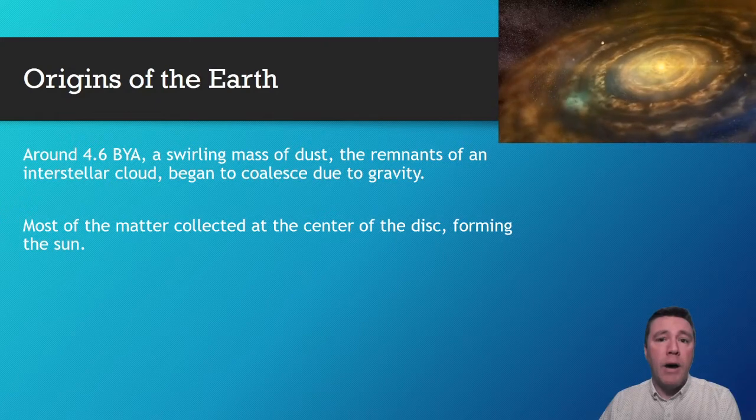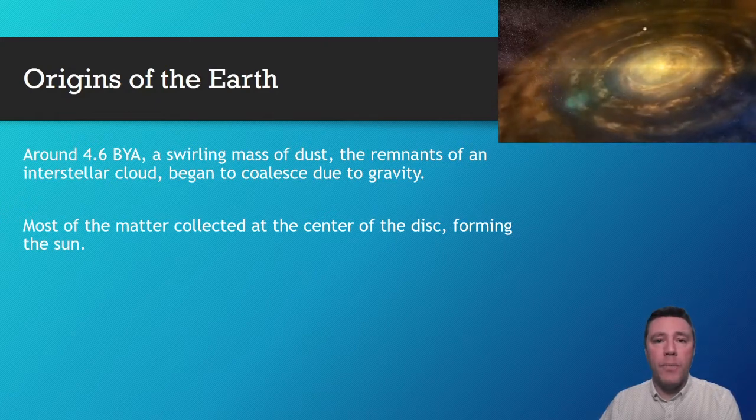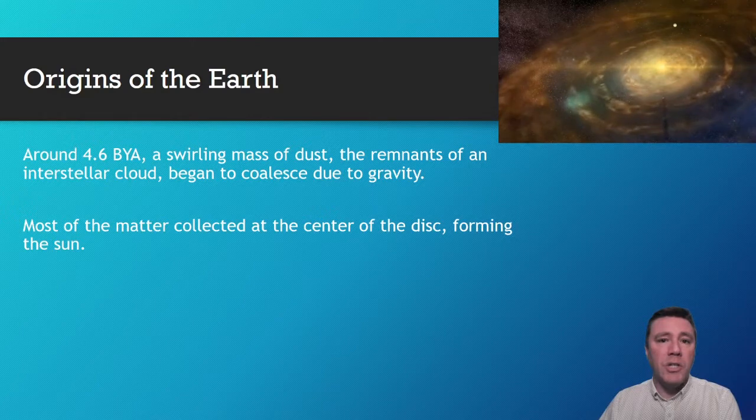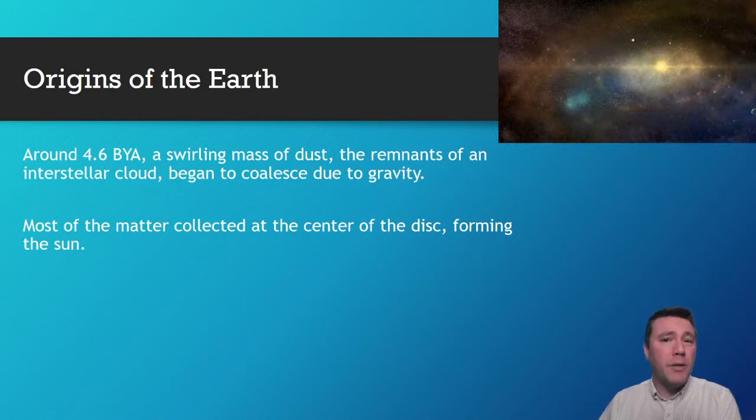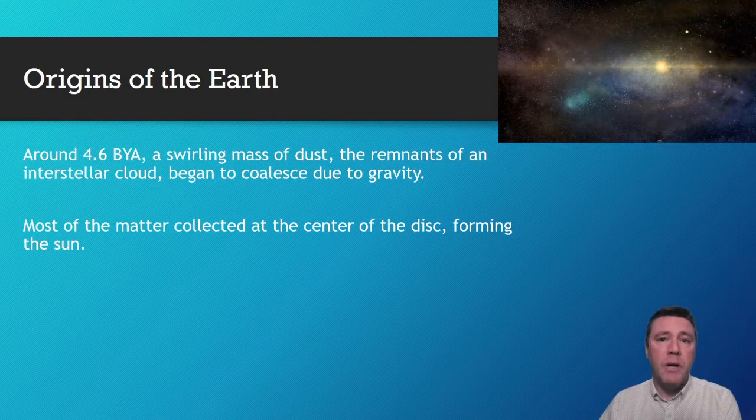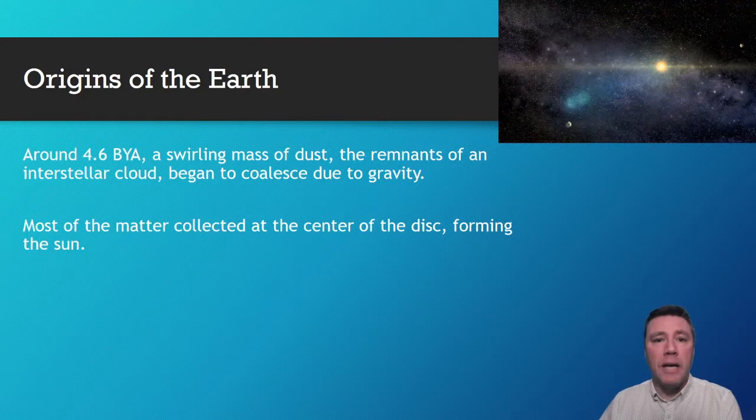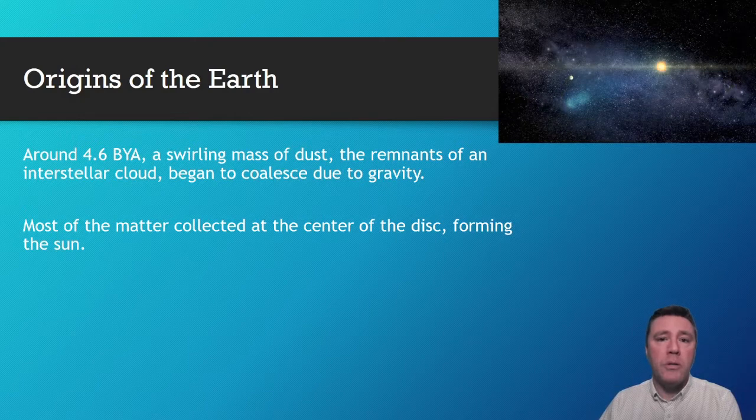Matter farther out in the disk was also clumping together. These clumps smashed into one another, forming larger and larger objects. Some of them grew big enough for their gravity to shape them into spheres, becoming planets, dwarf planets, and large moons. In other cases, planets did not form. The asteroid belt is made of bits and pieces of the early solar system that could never quite come together into a planet. Other smaller leftover pieces became asteroids, comets, meteoroids, and small irregular moons.